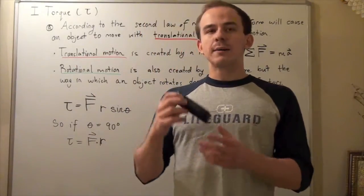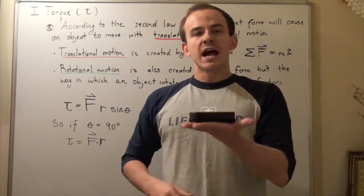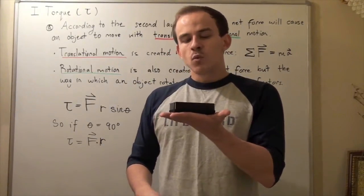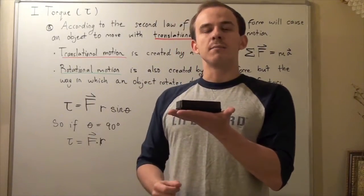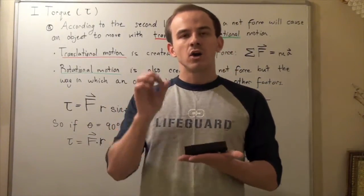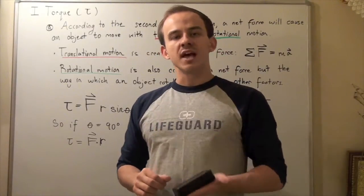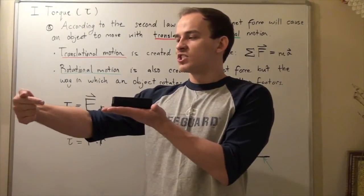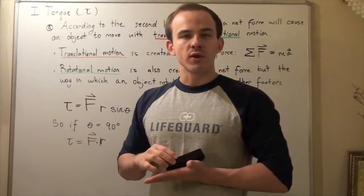Let's take this object, for example, and place it down on a surface. According to our first law of motion, this object will remain stationary, will remain in its current state of motion unless a net force acts on it. If I apply a net force at any point on my object, according to my second law of motion, my object will begin to accelerate in the same direction as my net force applied. If my net force is going along the x direction, my object will move along the x direction.